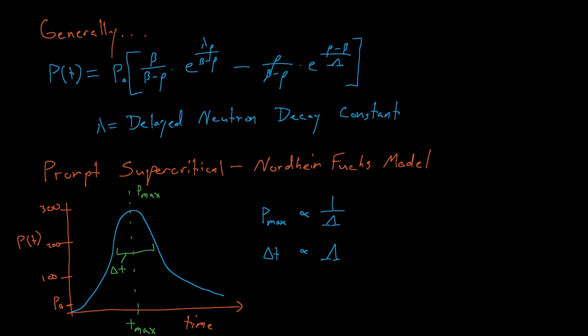So why does our power actually peak, and then start dropping off, instead of increasing forever and ever, and causing the next big bang? Well, the power peaks and eventually lowers because of something known as feedback.